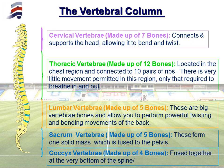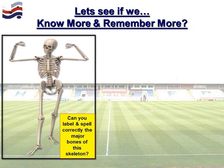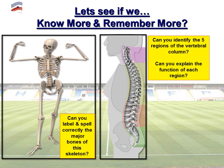So that's the vertebral column, and you'll need to know things about it — that's important. Let's do a quick recap to see how much you remember. Can you label and spell correctly the major bones of this skeleton? Pause the video and verbally go through the 21 bones and where you'd find them. Can you identify the five regions of the vertebral column and explain the function of each region? Pause the video and use the different coloured sections to identify the name of each region and what it's there to do.